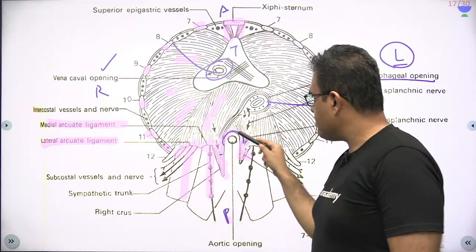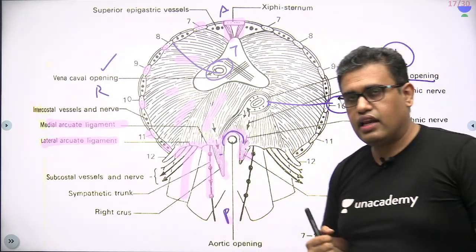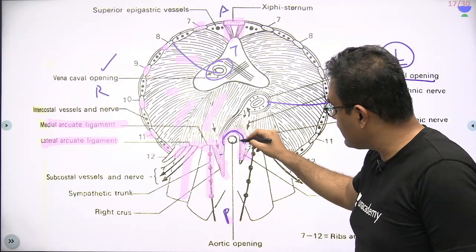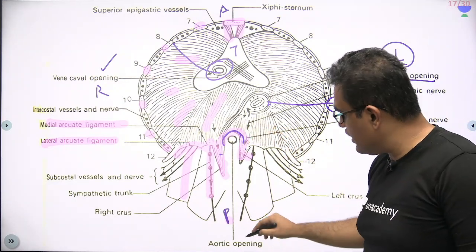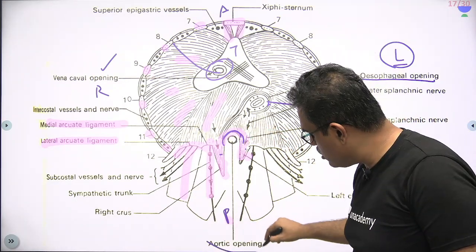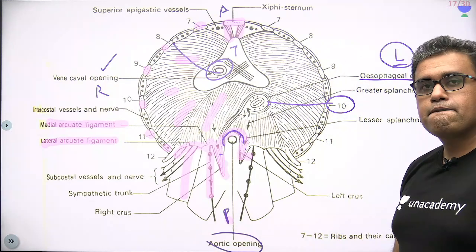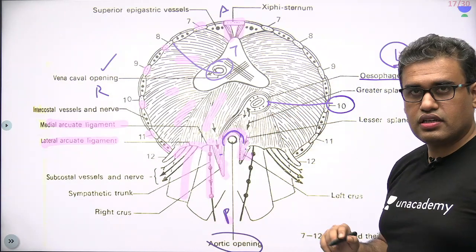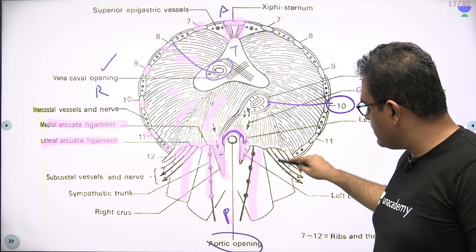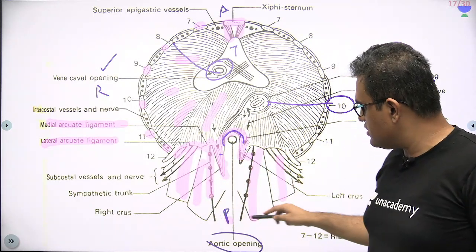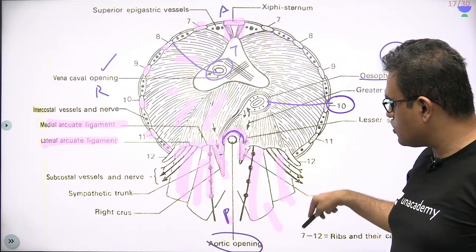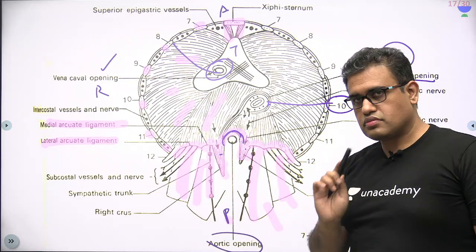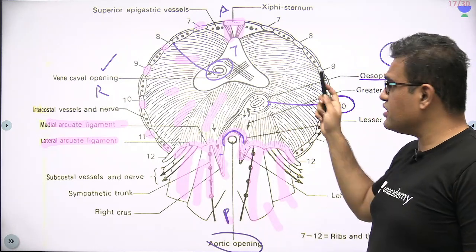In the midline you have the median arcuate ligament, and on each side you have medial and lateral arcuate ligaments — these are the upper margins of psoas major and quadratus lumborum respectively. The aortic opening passes behind the median arcuate ligament and does not perforate the diaphragm. Posteriorly you have the posterior abdominal muscles — psoas major and quadratus lumborum — with their upper margins forming the medial and lateral arcuate ligaments.